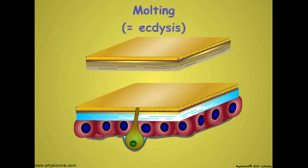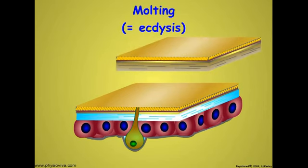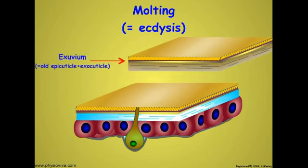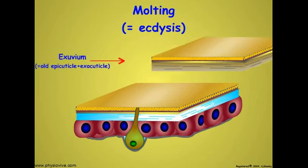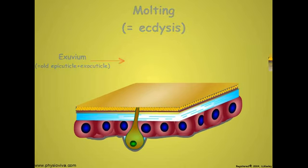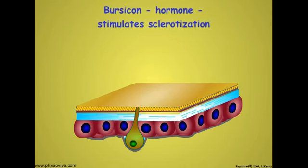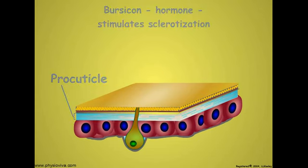Molting, which is properly called ecdysis, occurs when the old exocuticle and epicuticle are sloughed off. The shed cuticle is called the exuvium. A hormone called bursicon is released that stimulates the new procuticle layer that was present at the time of the molt to undertake sclerotization by polyphenols and be converted to the new exocuticle.